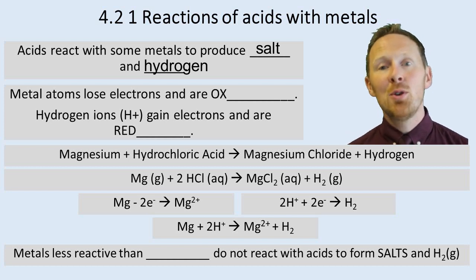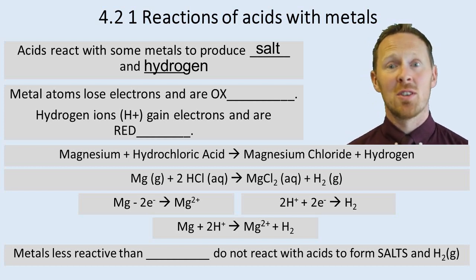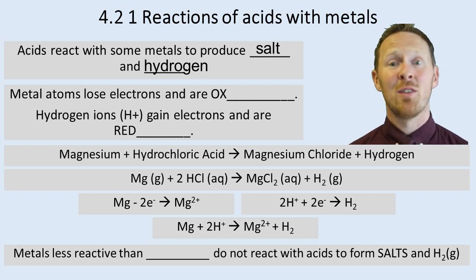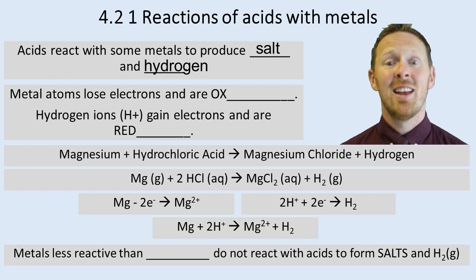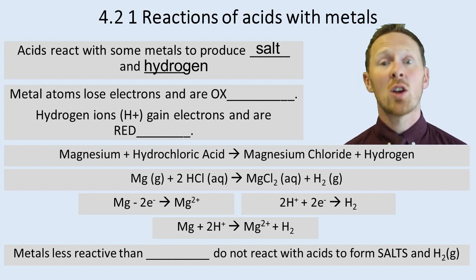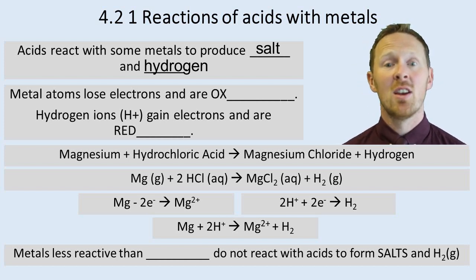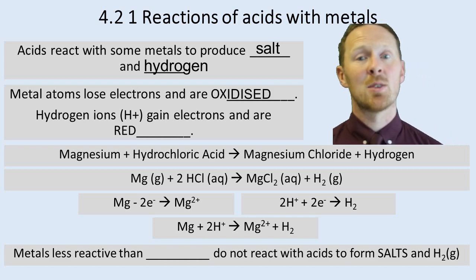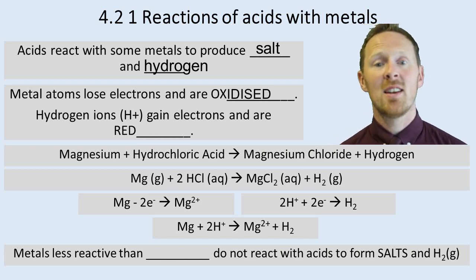Metal atoms lose electrons, and we know from the previous video that oxidation is a loss of electrons. So metal atoms lose electrons and are oxidised when they react with acids.